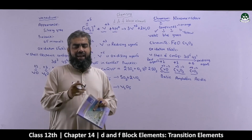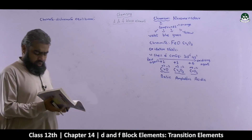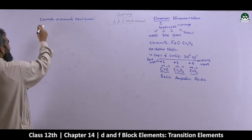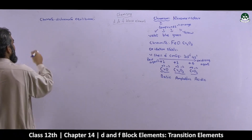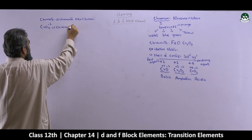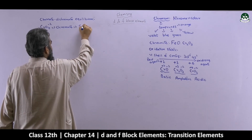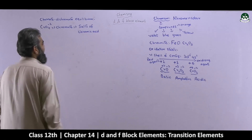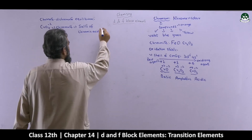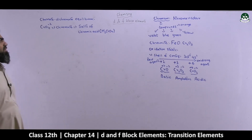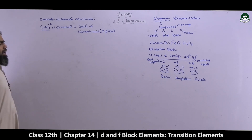Now let's move towards chromate and dichromate equilibrium. Chromates are written as CrO4 with a minus 2 charge — this negative ion is called chromate. Chromates are salts of chromic acid. Chromic acid has the formula H2CrO4, and its salts are called chromates, represented by this negative ion.